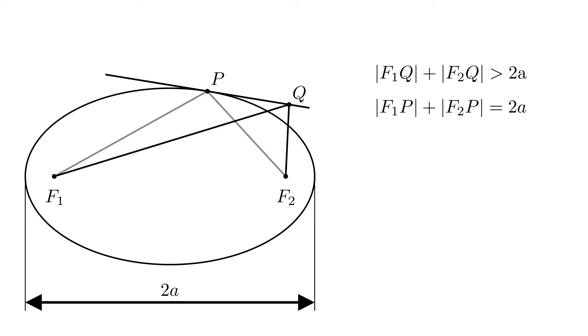We'll introduce another point, f2 prime, such that f2 and f2 prime are symmetric with respect to the tangent. And let's connect f2 prime with p and q. Now, f2q is equal to f2 prime q and f2p is equal to f2 prime p.